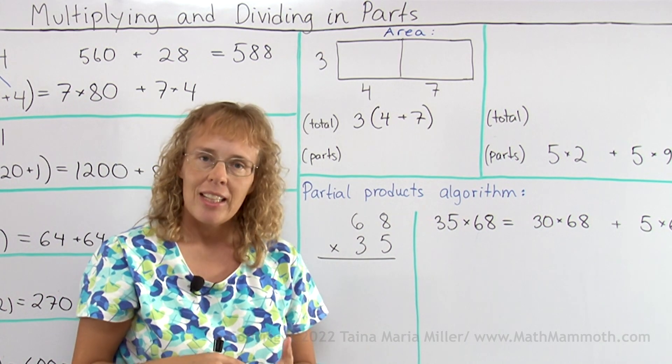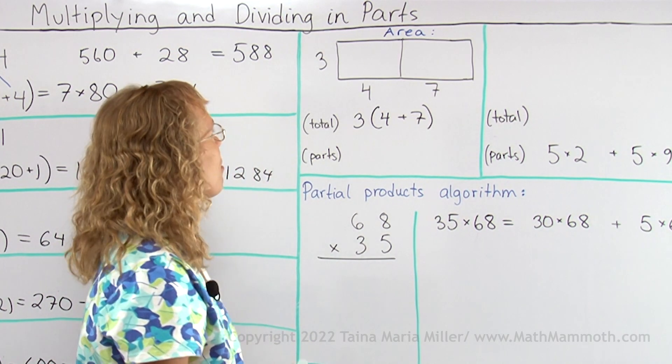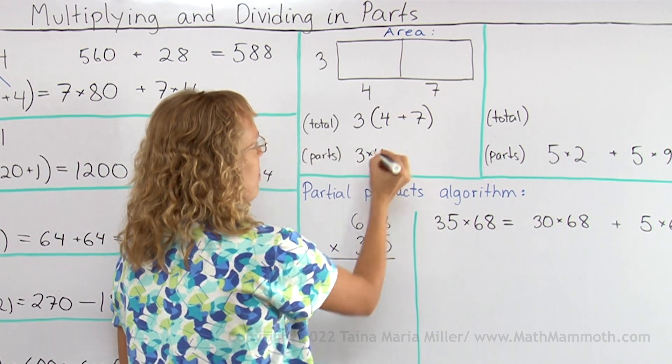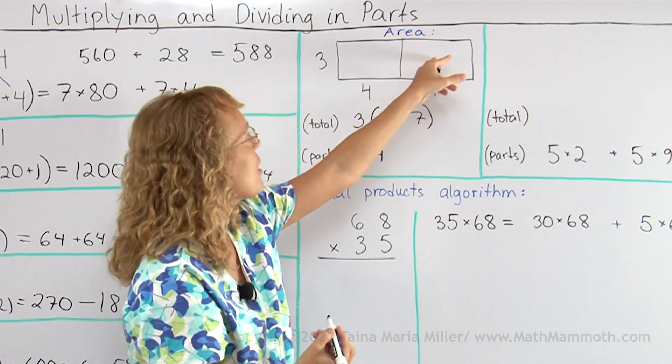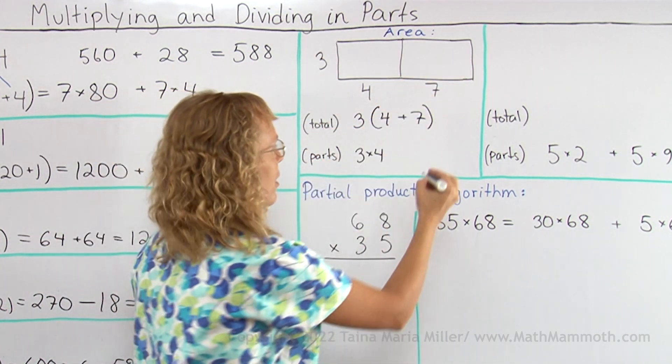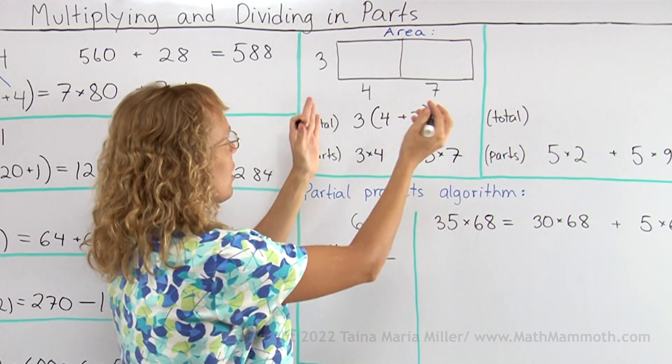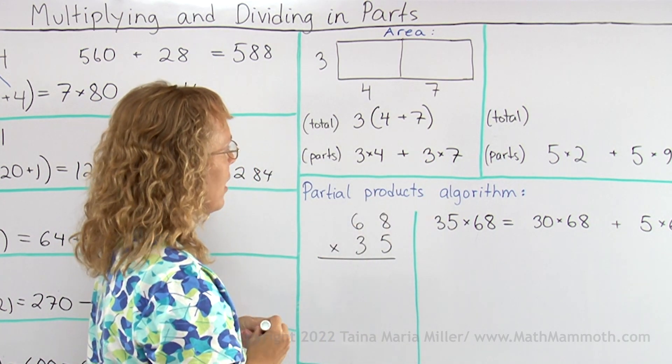I can also view it as two separate rectangles where the first rectangle has the area of 3 times 4 and the other rectangle here has the area of 3 times 7, right? And to get the total area, you would add those two areas like that.